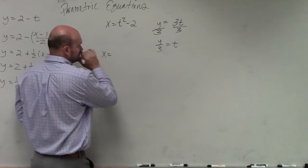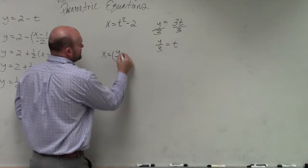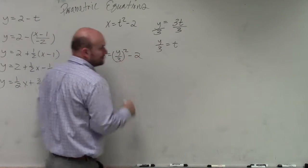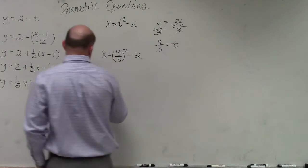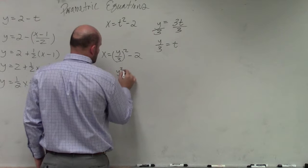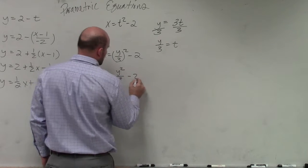So I have x equals y over 3 squared minus 2. Now all I need to do is square y over 3, which gives me x equals y squared over 9 minus 2.